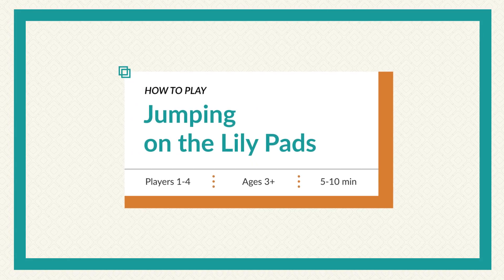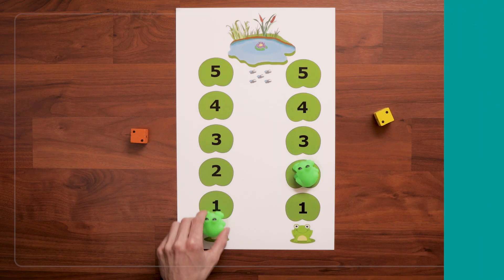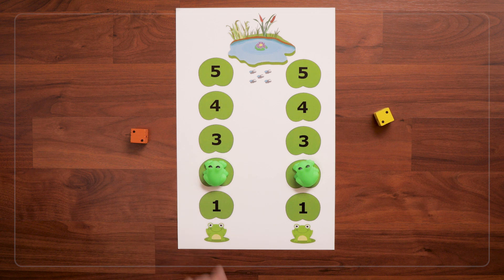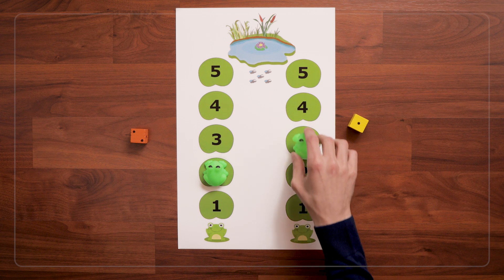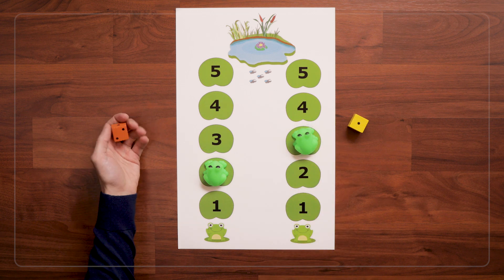This game is called Jumping on the Lilypads. The goal of this game is to roll a die and jump your game piece to the end of the board. In this case, we're jumping frogs on numbered lilypads to go swim in the pond at the end.